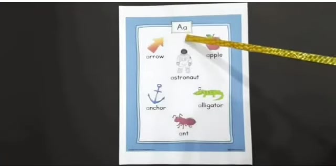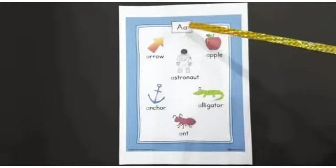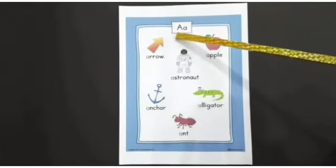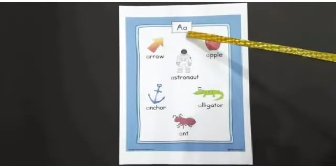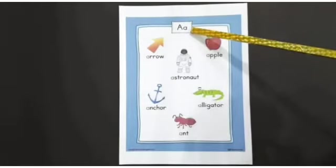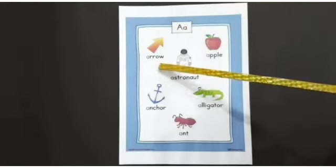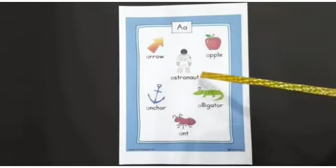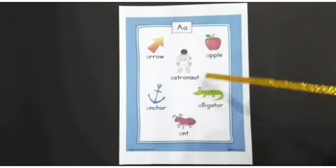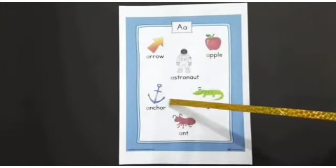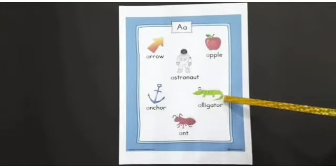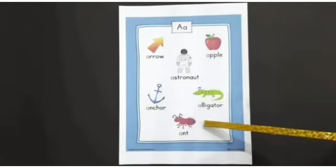Alphabet A. Capital A, small a. A says A. A for arrow, A for astronaut, A for apple, A for anchor, A for alligator, A for ant.